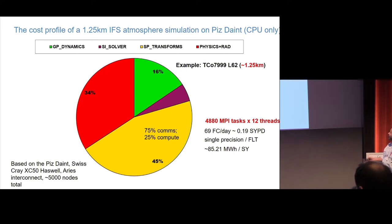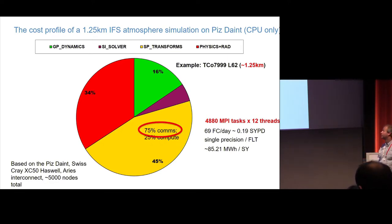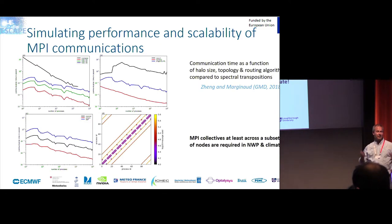The cost profile of the Piz Daint one-kilometre simulation — CPU only — used 4,880 MPI tasks with 12 threads. The extrapolated cost is about 69 forecast days per day at this resolution, and about 85 megawatts. In the spectral transform part, it is only 45% of model time-step cost, but 75% of that is in communications and only 25% in compute. Communications and whether you go for larger or smaller halos is an important aspect. Some form of MPI collectives across a subset of nodes will be required in NWP and climate, and we need to find solutions.